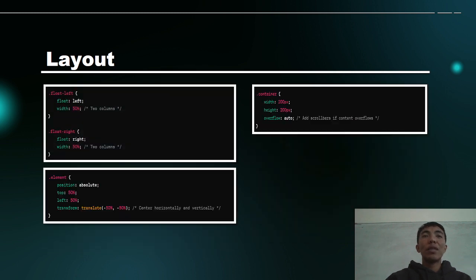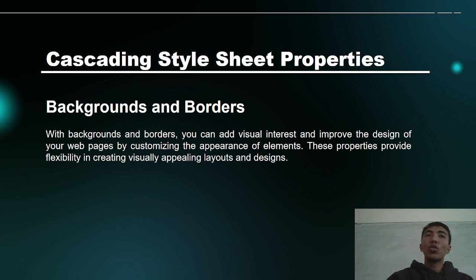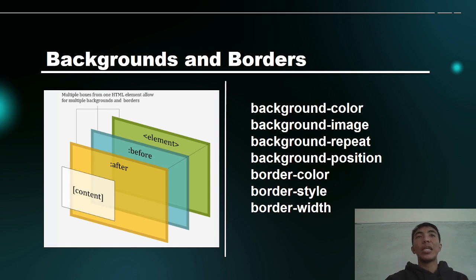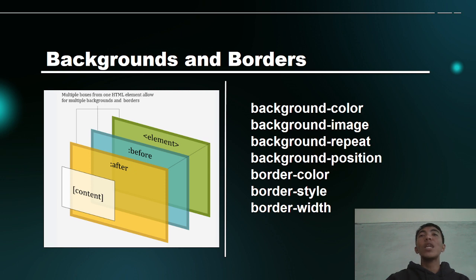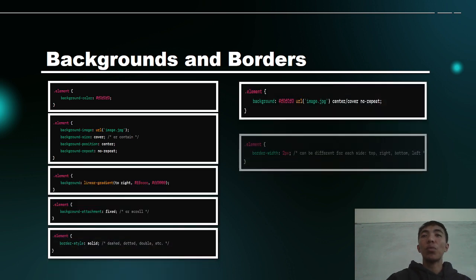We also discussed backgrounds and borders, which are needed in creating design in web. Backgrounds and borders are an important part of our website. The different properties are background color, background image, background repeat, background position, border color, border styles, and border width. These are very important in every design we create using Cascading Style Sheets.